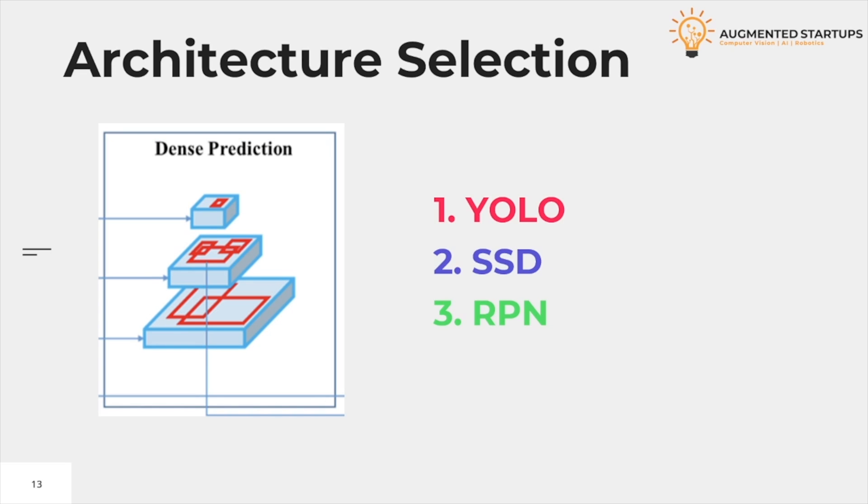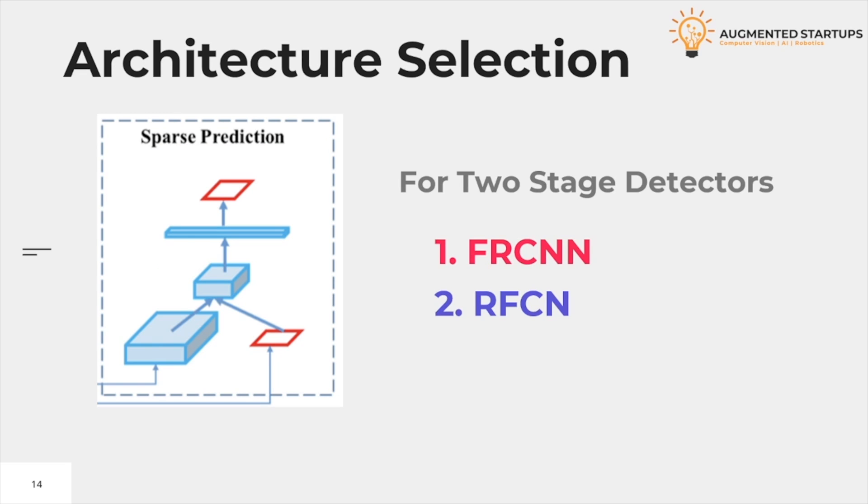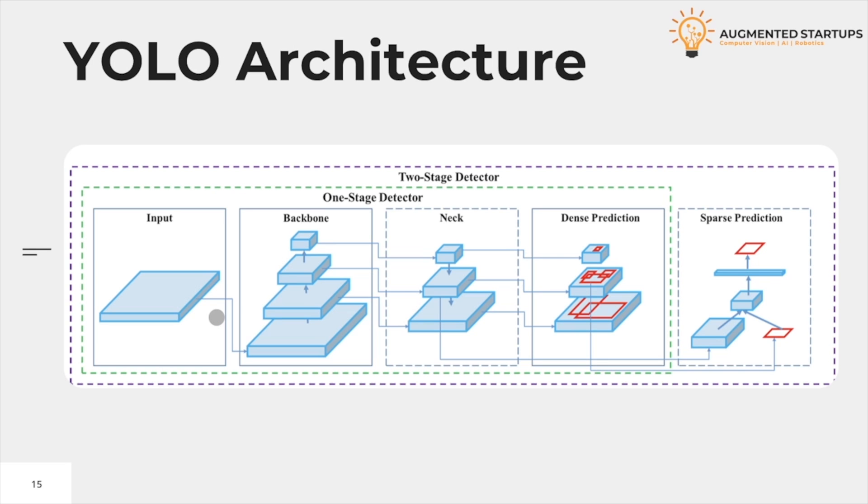Detection happens in the head, so the head is also called dense prediction. To set the detector to decouple the object localization and classification task for each module. One-stage detectors make the prediction for localization and classification at the same time. This layer is present only in one-stage detectors like YOLO, SSD, RetinaNet, and other self-detection. They were completely different. Sparse prediction is for two-stage detectors, FRCNN and RFCN, which does the traditional class probabilities for the model input. YOLO is one stage. Together, they form the YOLO architecture.